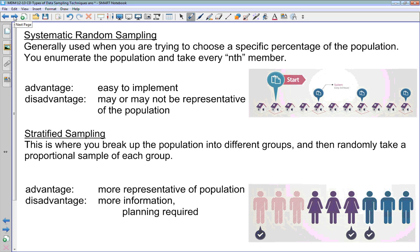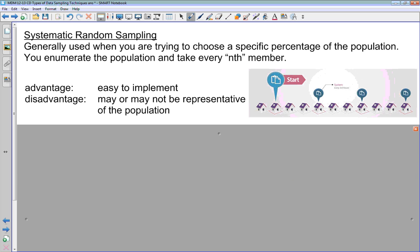Next up is systematic random sampling. This is when you are usually trying to choose a specific percentage of the population. You know you want to survey about 10% of the population, so that means you're going to survey 1 in 10 people. You enumerate the population or give them all a number, and you take every 10th member or something like that. So an example here is we've got a row of houses that we want to survey. We choose a random starting point here, and we survey every third member of our population, so about 33% of the population.